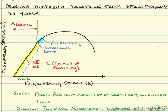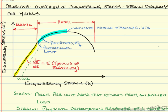With additional force, the test specimen will eventually begin to neck — that is, the diameter or thickness of the specimen decreases in size. We call this point the ultimate tensile strength, or UTS. This is the maximum possible engineering stress that the specimen can take in tension.